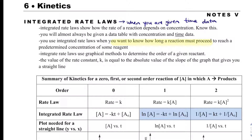Oftentimes we'll use graphs to help us out. And when we do have a graph, the rate constant will be equal to the absolute value of the slope. What we can derive from that is that k, the rate constant — and that's a little k — is always positive.